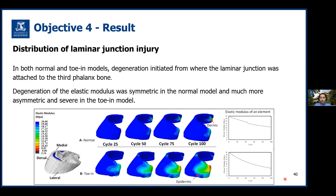This figure shows the distribution of laminar injury in the normal and toe-in models after 25, 50, 75, and 100 cycles. The injury was presented as degeneration of tissue elastic modulus. In both normal and toe-in conditions, the injury was initiated from the quarters. However, there was a significant difference between injury distribution within the two models. Degeneration was relatively severe and persistent at the lateral side in the toe-in model, but injury distribution was approximately symmetric in the normal hoof model. In the FE model with normal conformation, injury initiated and progressed from the inner layer of the laminar junction where it was attached to the P3 bone. In the toe-in model, the injury first influenced the laminar junction at the P3 attachment, but later damage progressed to the outer layer where the laminar junction was attached to the internal surface of the wall.